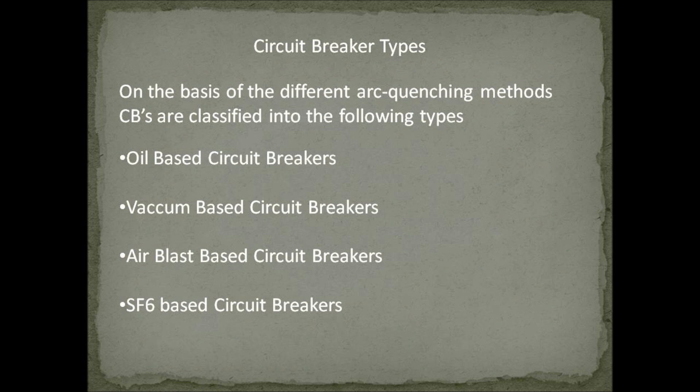All high power circuit breakers employ arc quenching methods. Arcs occur whenever two high voltage contacts are interrupted, and they are very dangerous and must be removed. Some arc quenching methods include oil, vacuum, air blast, and SF6 gas. Based on these different arc quenching methods, circuit breakers are also classified.